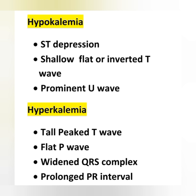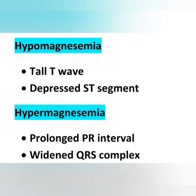In hypokalemia, there is ST depression, or shallow, flat, or inverted T wave, or prominent U wave — any one or all of these changes can be seen. In hyperkalemia, tall peaked T wave, flat P wave, widened QRS complex, or prolonged PR interval can be seen. In hypomagnesemia, tall P wave or depressed ST segment, prolonged PR interval, or widened QRS complex can be expected.